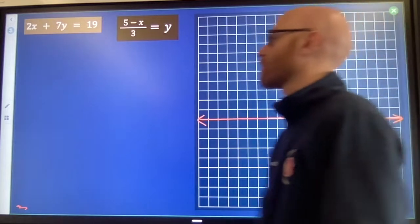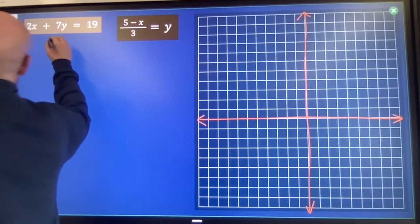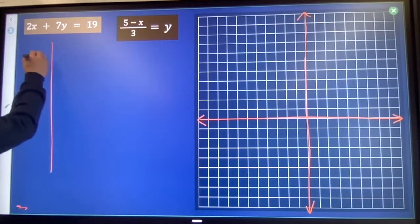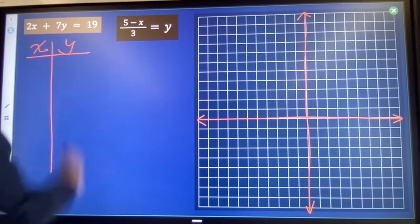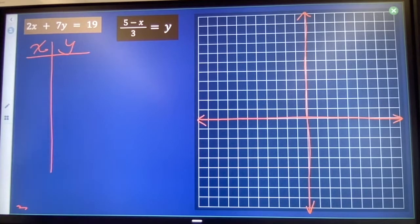We are going to first choose some x and y values that make this true. You can use whatever process you need to get your x and y values. You can guess and check, you can use algebra. If you pick your x values, you can unwind to find your y values.